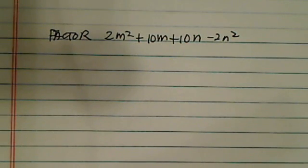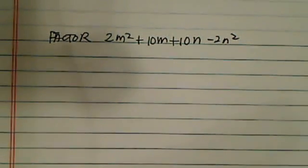To factor this one, I have 2m² + 10m + 10n - 2n².